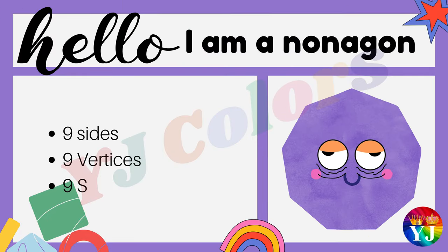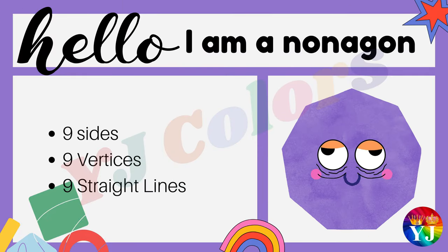Hello, I am a non-agon. I have nine sides, nine vertices and nine straight lines.